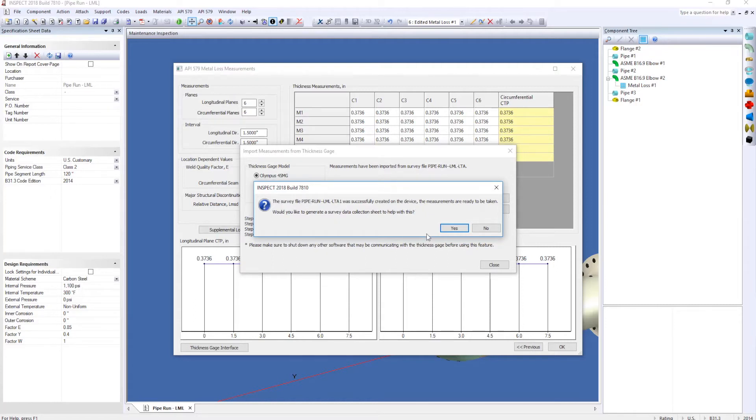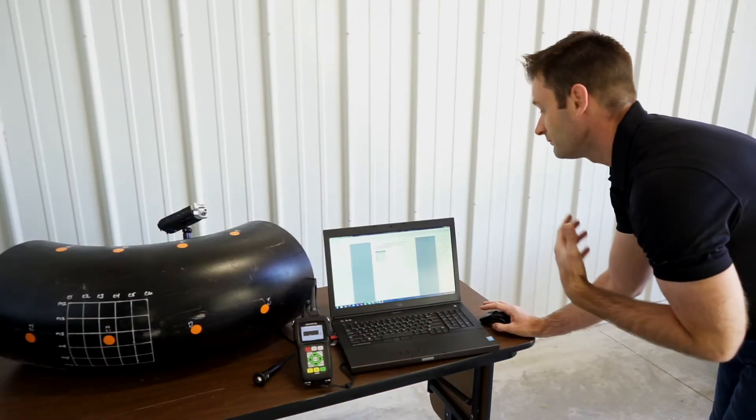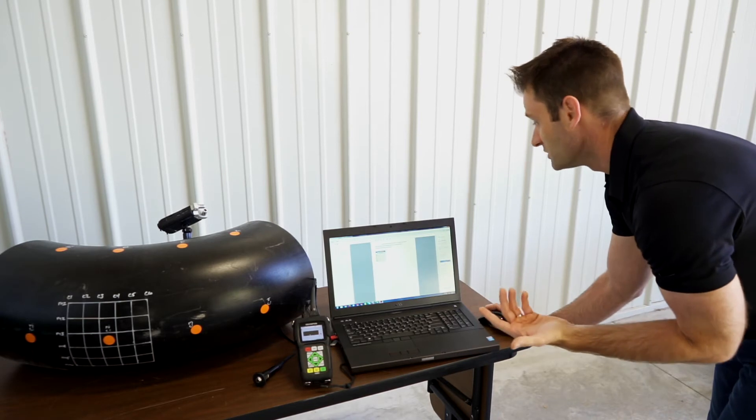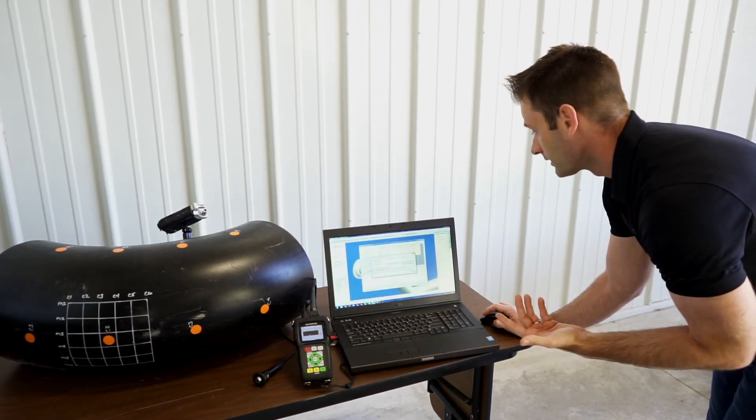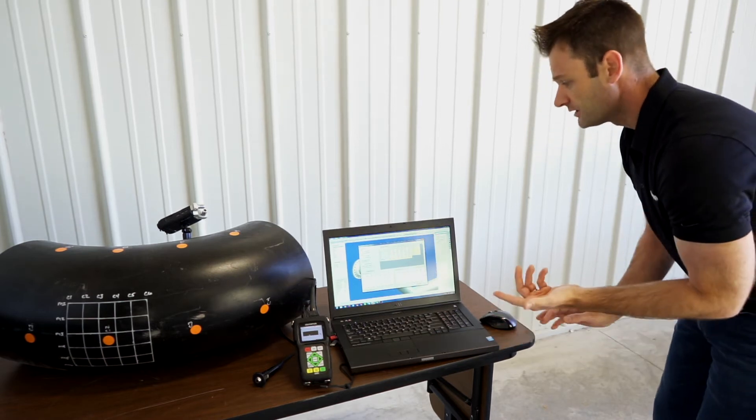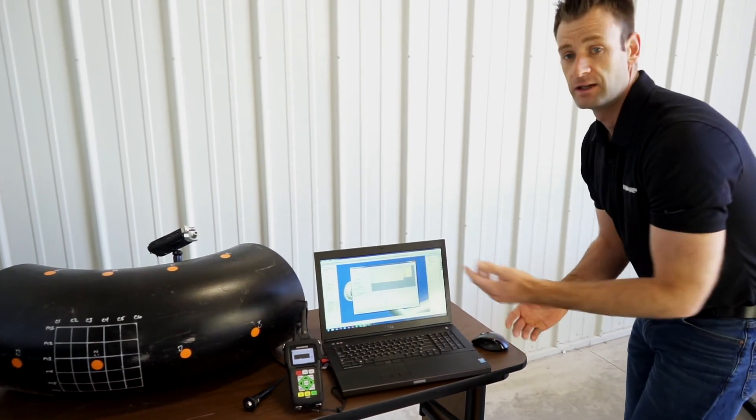Okay so it's been successfully created. So what I can do is click yes. This will also generate a survey data sheet right here. It's a PDF, very handy. If you want to print this off and take it out to the field you can. But we'll just switch back to inspect right now. Click close. What I can do is now unplug this and I'm ready to take my measurements.